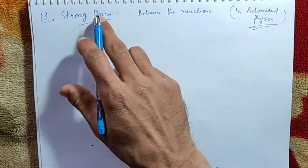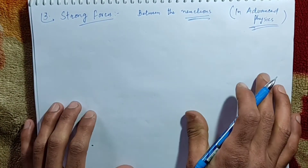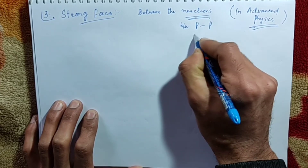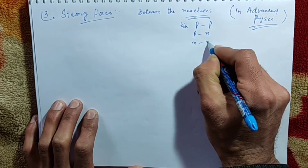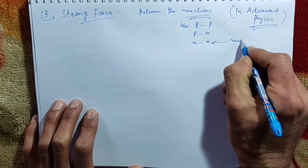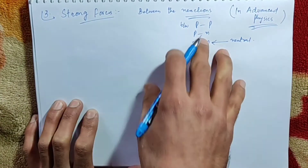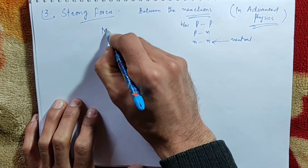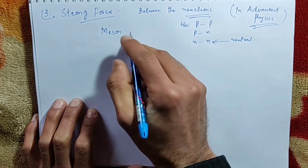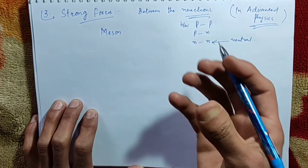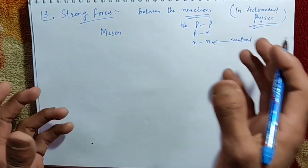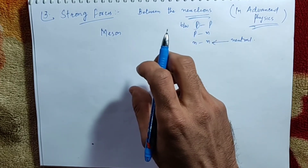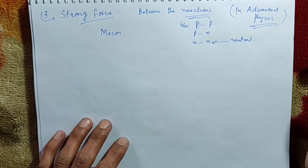The strong force exists between the nucleons — between proton and proton, proton and neutron, or neutron and neutron, even though neutrons are neutral particles. The strong force exists between them. For this, various theories were given — like the meson theory by Yukawa. This was the first theory suggesting a particle called the Pi meson, which is shared between two protons or between a proton and neutron, and the exchanging of them results in a force.